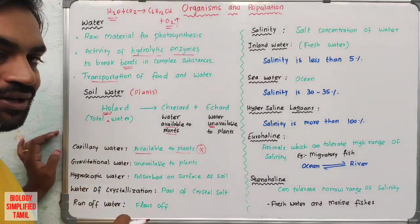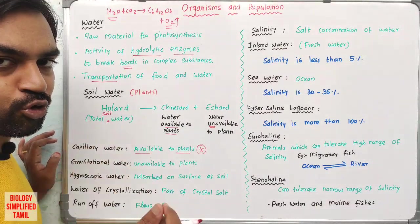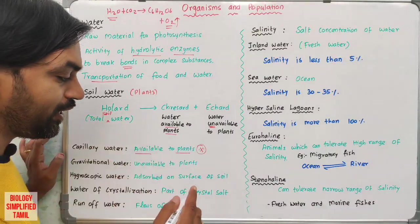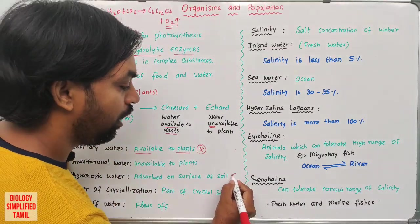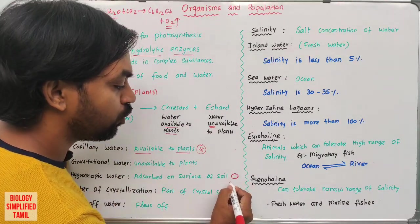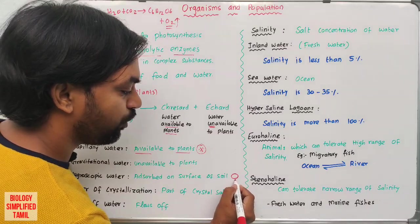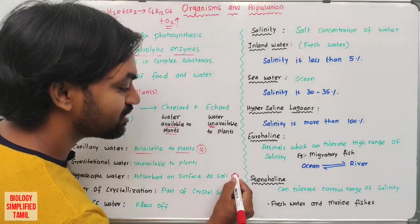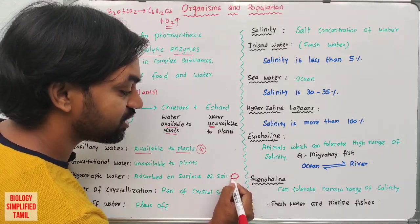Next, hygroscopic water. Hygroscopic water is absorbed tightly on the soil surface and is unavailable to plants.